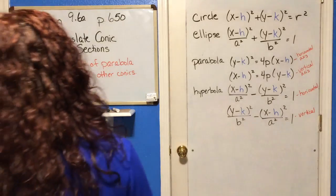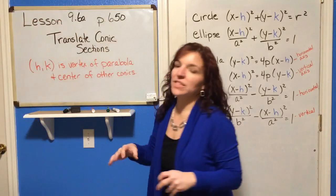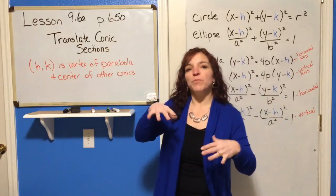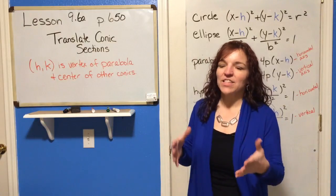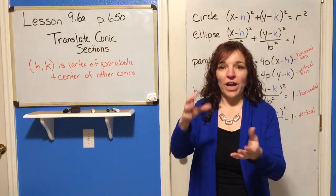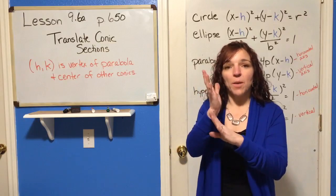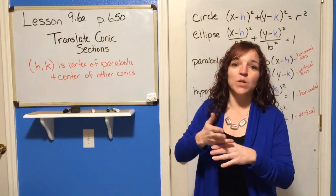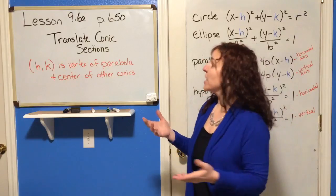First half of section 9.6, translating conic sections. All of these shapes that we've been graphing are conic sections, and the reason for that is if you were to take a cone — or actually two inverted cones on top of each other — and slice it in different ways, that's how you would get these different shapes.